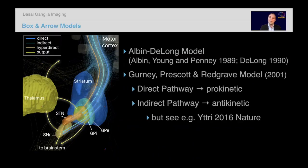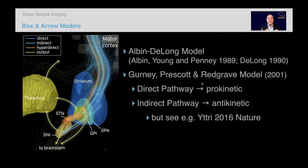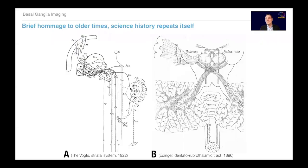Looking more focused on the basal ganglia, very important are the box-and-arrow models, especially the one by Albin and DeLong from around 1990 that many have seen in medical school. From the computational side, Gurney, Prescott, and Redgrave created a model with the notion that the direct pathway is pro-kinetic and the indirect pathway is anti-kinetic. These direct, indirect, and hyper-direct pathways functionally play a role and have been very influential. It's worth noting similar wiring diagrams were created as far back as 1922.